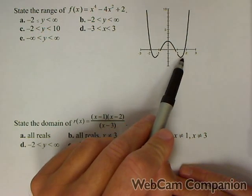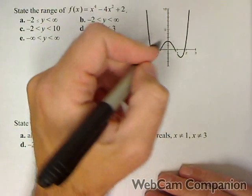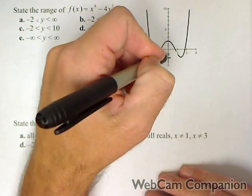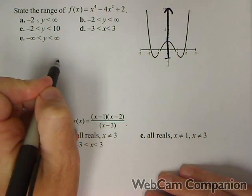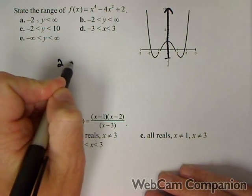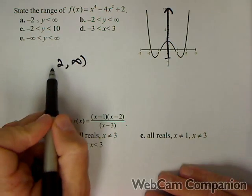So here's our graph, and the range, remember, is the y values that are covered. So we can see, basically, it's from two up. So right now, we already know that it's from two to infinity.